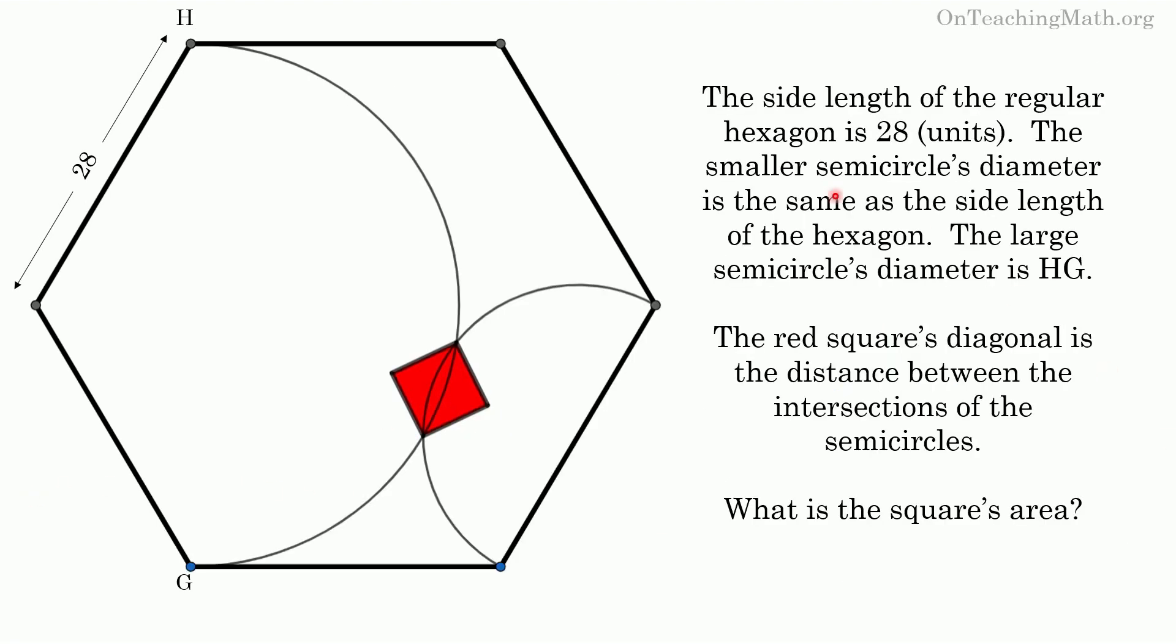Here are the details. This is a regular hexagon. The side lengths are 28. Got a semicircle right here. Another semicircle right here if you connected HG for Hitchhiker's Guide to the Galaxy. Where these two semicircles intersect creates a link that is the diagonal of this little red square whose area we must find.